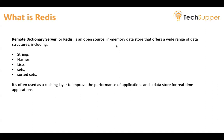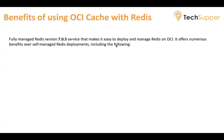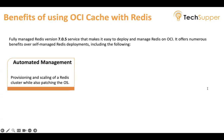What are the benefits of using OCI Cache with Redis? First, it's fully managed — provisioning, scaling, and patching of your Redis cluster are all managed for you. OCI has released Redis version 7.0.5, making it easy to deploy and manage Redis on OCI. With automated management, you simply fill out a small form and all the heavy lifting is done by OCI, freeing you up to focus on developing your application.